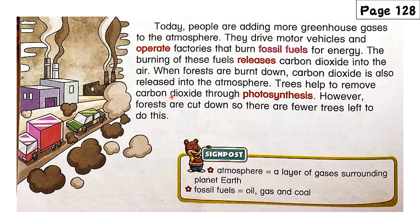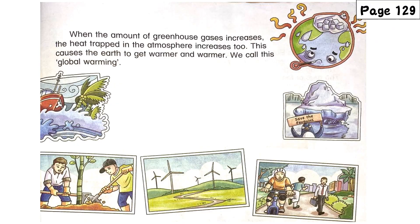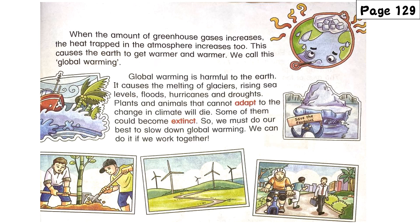Trees can remove carbon dioxide through photosynthesis. However, forests are being cut down, so fewer trees can do this. When greenhouse gases in the atmosphere increase, the heat in the atmosphere also increases. As the temperature of the whole earth rises, we call this global warming.